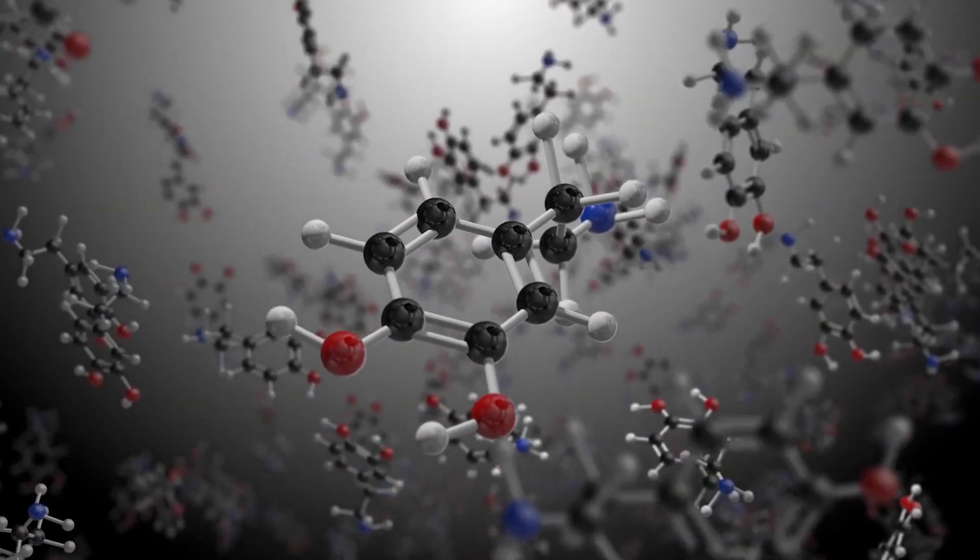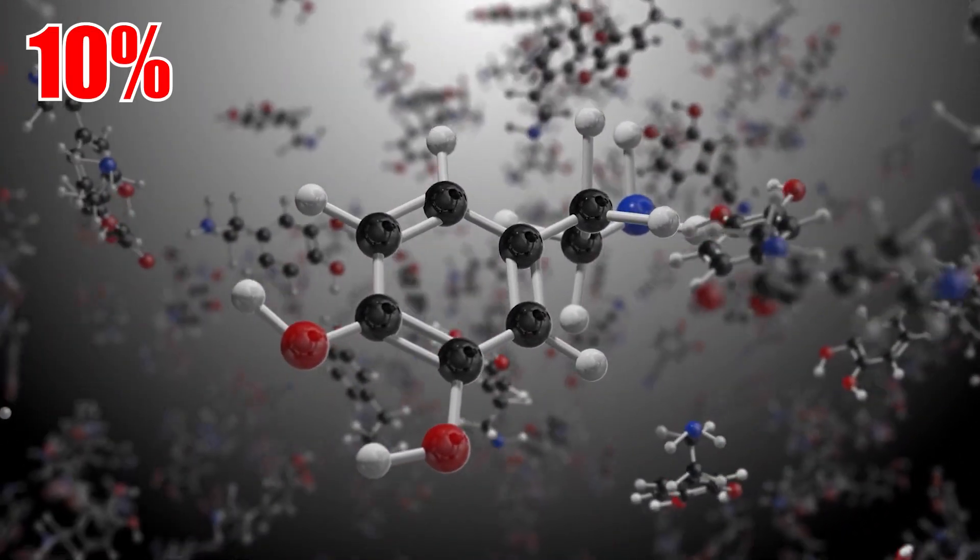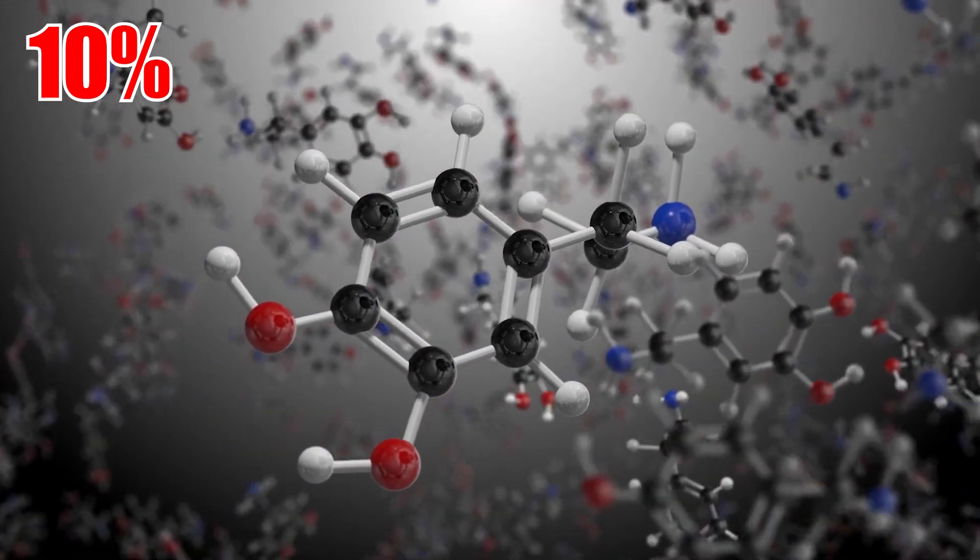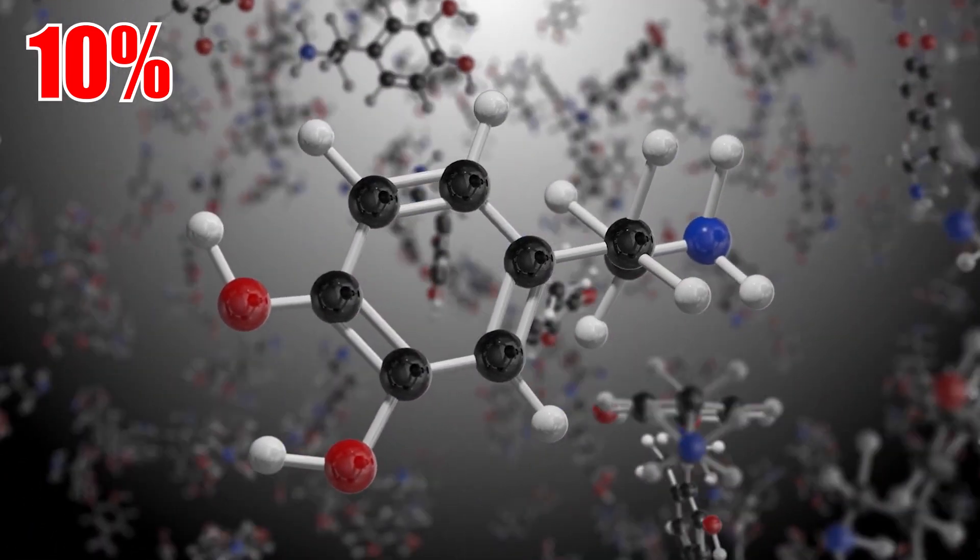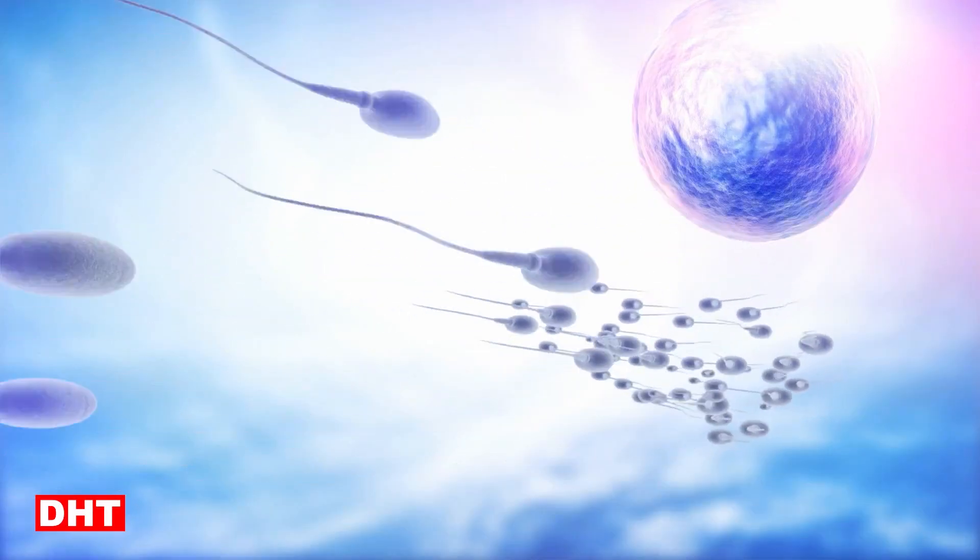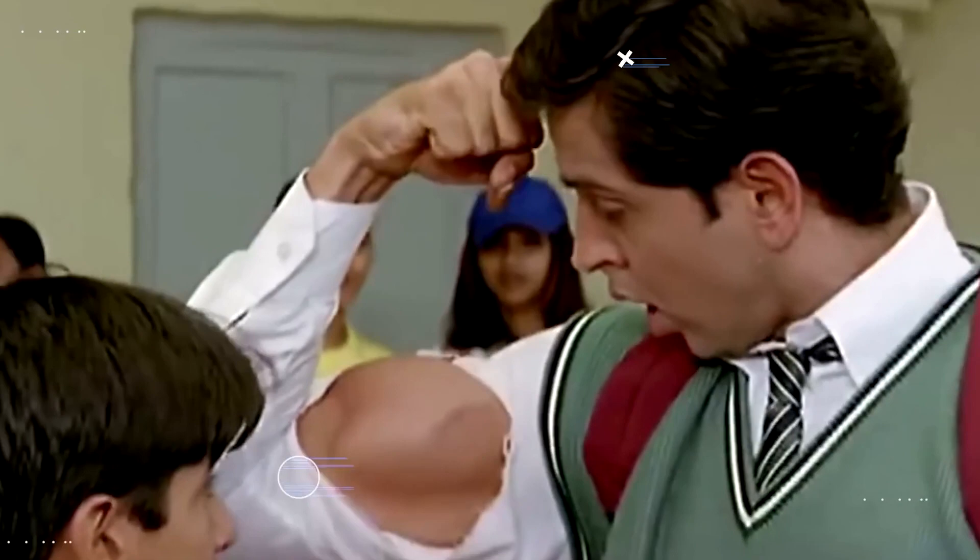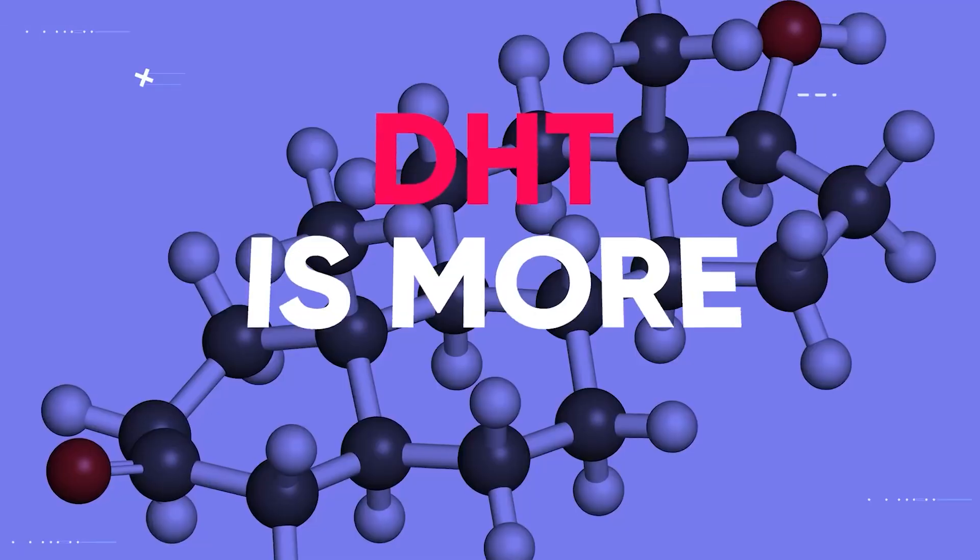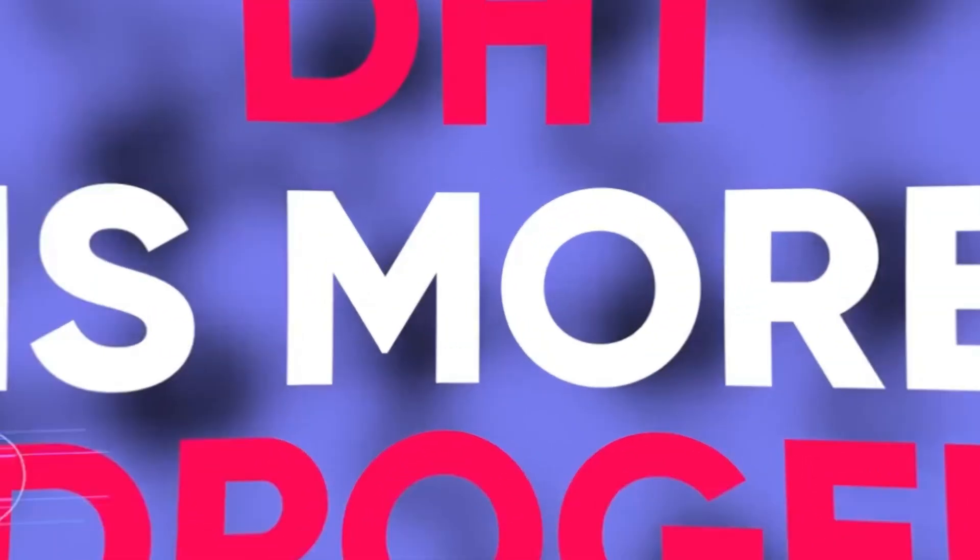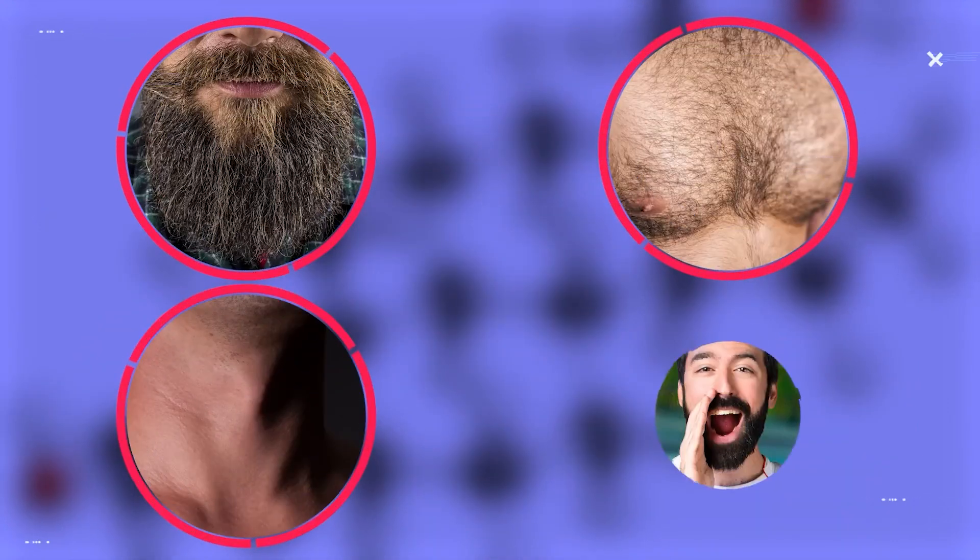Aside from being transformed into estrogen, roughly 10% of the testosterone in your body is converted into dihydrotestosterone, generally known as DHT, by an enzyme called 5-alpha reductase. While testosterone is well known for its anabolic muscle building effects, DHT is more androgenic, which means it influences things like beard growth, body hair growth, Adam's apple size, and voice pitch.